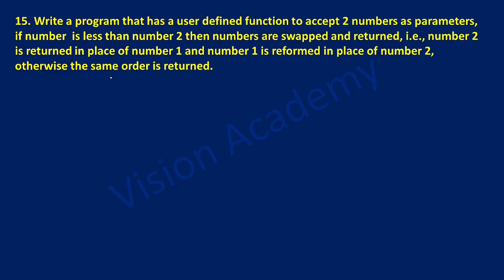Hello and welcome to Vision Academy. In this video, we are going to study lab program 15. Write a program that has a user-defined function to accept two numbers as parameters. If number 1 is less than number 2, then the numbers are swapped and returned — that is, number 2 is returned in place of number 1 and number 1 is returned in place of number 2.